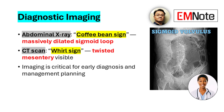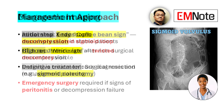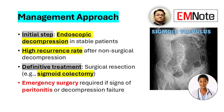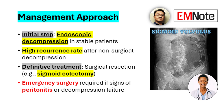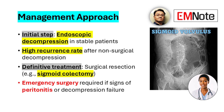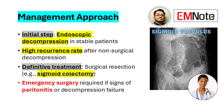Initial management involves endoscopic decompression for stable patients, but recurrence is common. Definitive treatment requires surgical resection, also known as sigmoid colectomy, particularly in cases of peritonitis or failed decompression.